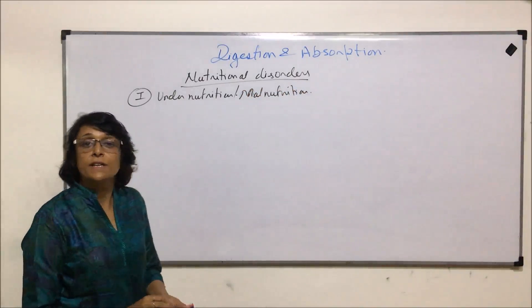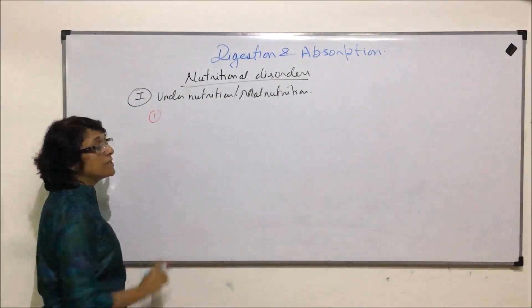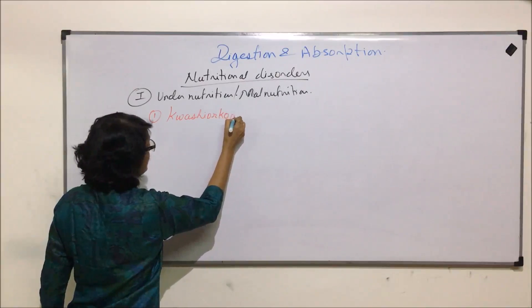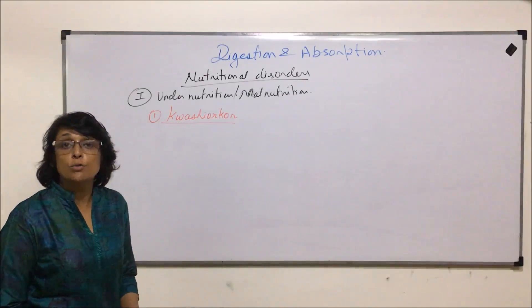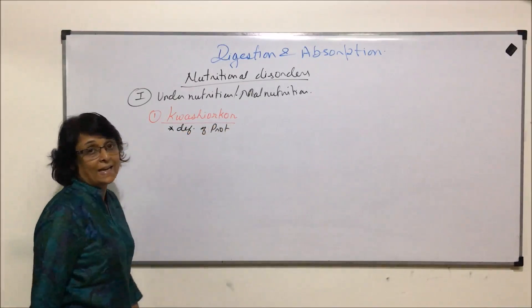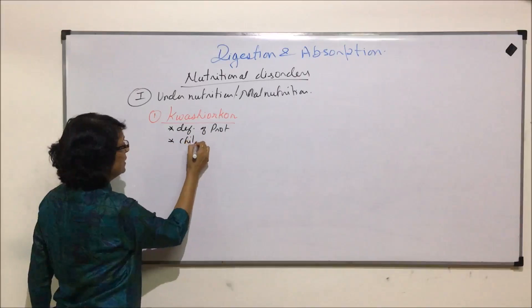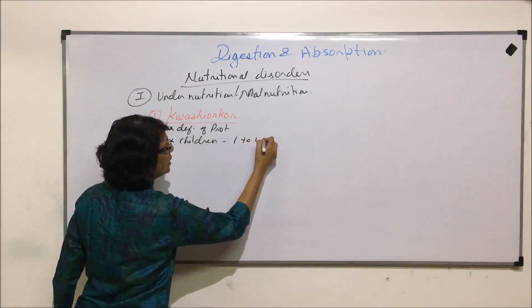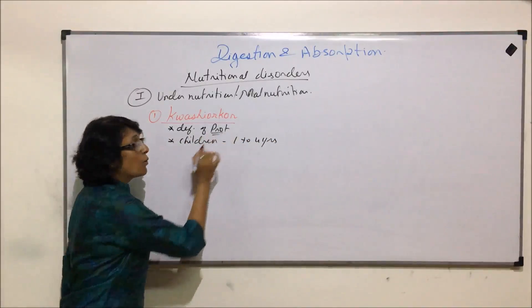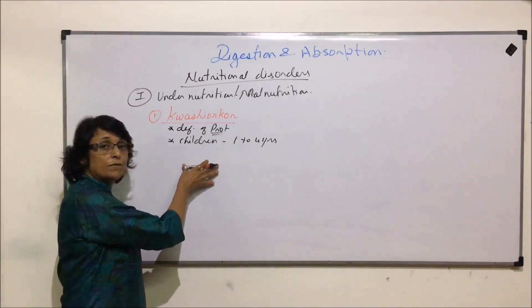A few of these diseases we have already discussed; we will sum those up briefly but will focus on the most important ones. The first is kwashiorkor. This disease is caused due to deficiency of proteins in the diet. It is seen in early age, affecting children of age one to four years. This deficiency occurs when they are not getting sufficient protein in their diet.